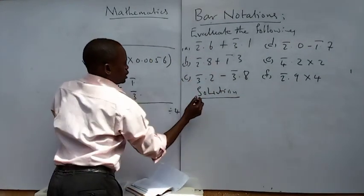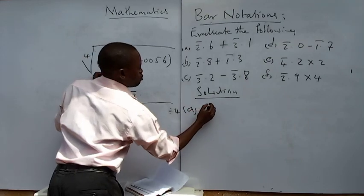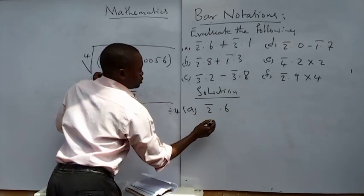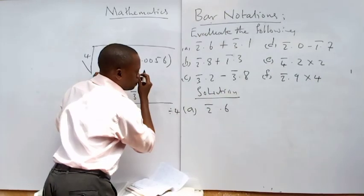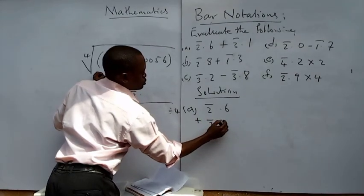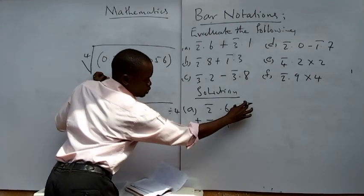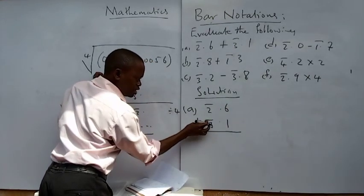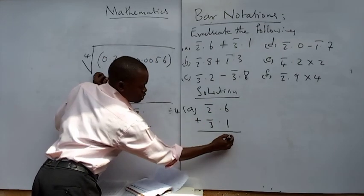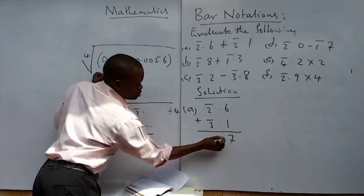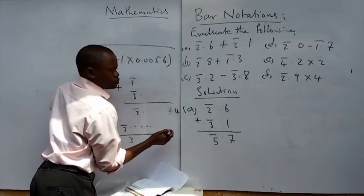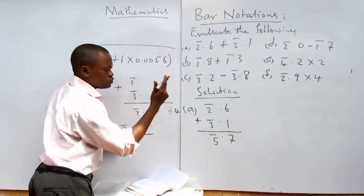So assuming I have a matter like this — example (a) — I have bar 2 point something, and there will be other figures which you add like you are adding positive numbers; those are not the issue. And you are adding it to bar 1 point something with other positive numbers also, and you add them like positive numbers. My concern is the bars. Assuming I add these, the decimal part you add like positive numbers. What about the bar parts? Adding bar 2 to bar 5 — that is adding two negative numbers — the result is bar 7.